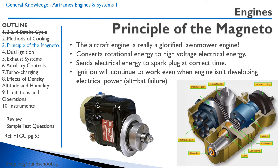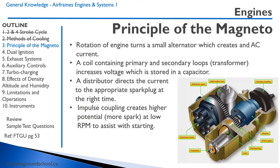On the left you can see how a magneto looks from the exterior, and on the right is how the magneto looks when cut open. The rotation of the engine turns what is essentially a small alternator — a small generator — inside the magneto, and that creates an AC current. A coil containing primary and secondary loops, essentially a transformer, increases the voltage, and that voltage is stored inside a capacitor. There is a distributor block that spins and directs the current from the capacitor to the spark plug at exactly the right time.